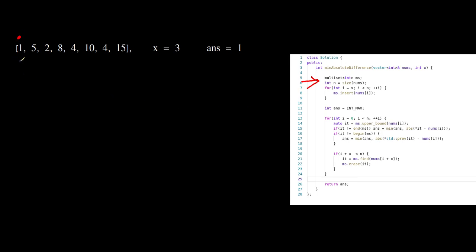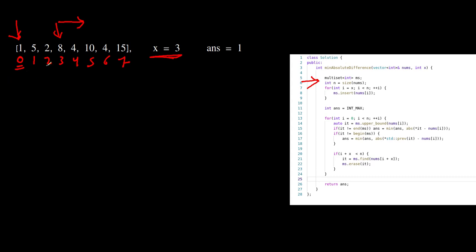We need to compare each element with elements that are at least x indices apart from the current index. So with indices 0, 1, 2, 3, 4, 5, 6, 7 — if we are currently at index 0, we need to compare it with elements at index 3 and above. So we push these elements from index 3 to 7 into the multiset.